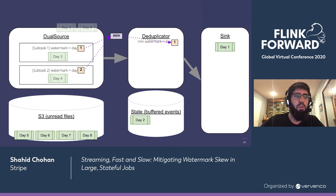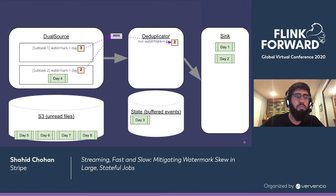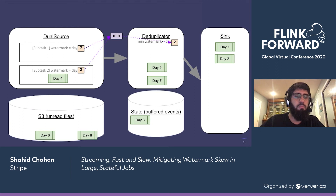Next, we read in days 3 and 4. Source subtask 1 finishes processing the data for day 3, and the deduplicator reads in the min watermark from the sources, which is day 2. So day 2's data is sent to the sink, and day 3's data goes into buffered state. Now days 5 and 7 are sent to subtask 1, while subtask 2 is taking a really long time to process day 4's data. It does eventually finish, and days 3 and 4's data are sent to the sink. Then day 5 and 7's data is buffered in state.